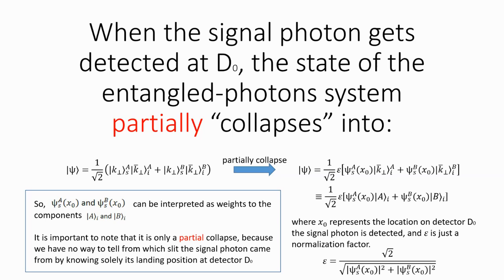It is important to note that this is just a partial collapse, because we cannot determine from which slit the original photon went through by just knowing the landing positions of the signal photons, if their wave functions have enough overlapping region. And the idler photon still carries the which path information and has not yet been detected.